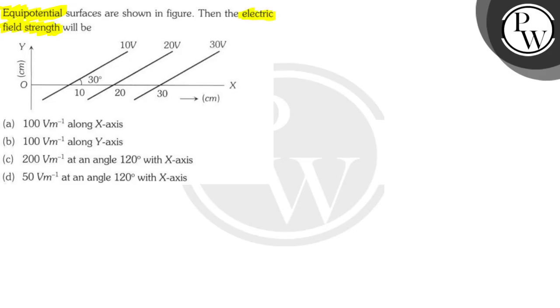And we have the options: 100V per meter along the x-axis, 100V per meter along the y-axis, 200V per meter at an angle of 120 degrees with x-axis, and 50V per meter at an angle of 120 with the x-axis.